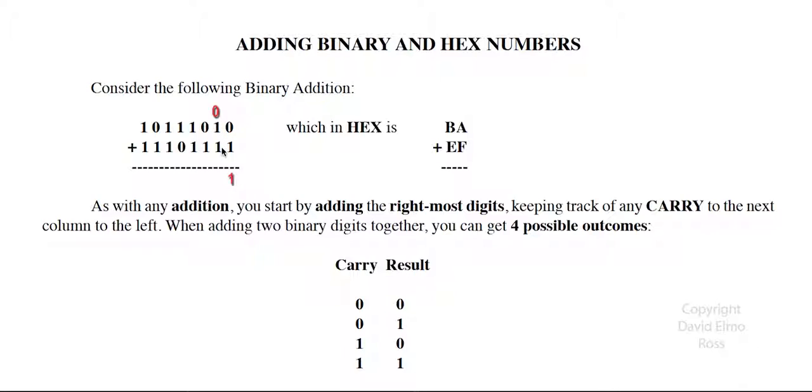Then we have zero plus one plus one, which is two, which is one for the carry and zero down here. And finally we have one plus one plus one, which is an extra ninth bit plus a one here.